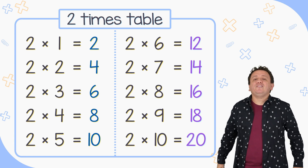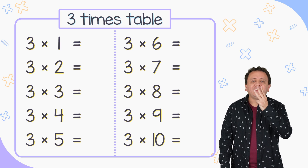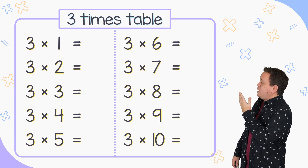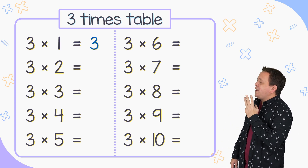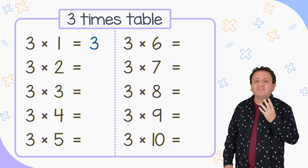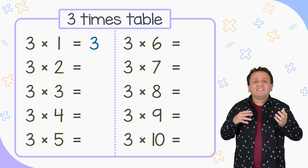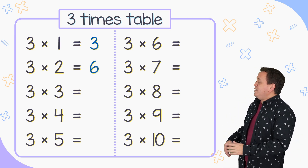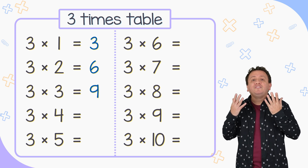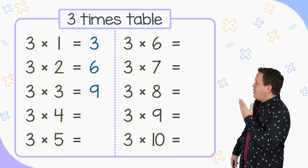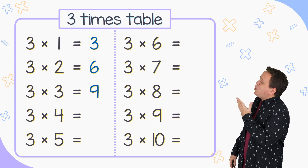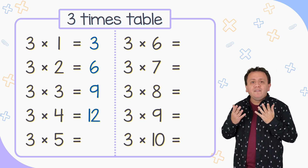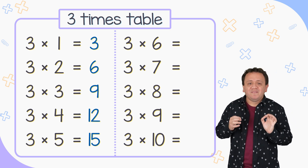Are you ready for the next multiplication table? 3 times table. 3 times 1 is equal to 3. 3 times 2 equals 6. 3 times 3 is equal to 9. 3 times 4 equals 12. 3 times 5 is equal to 15.